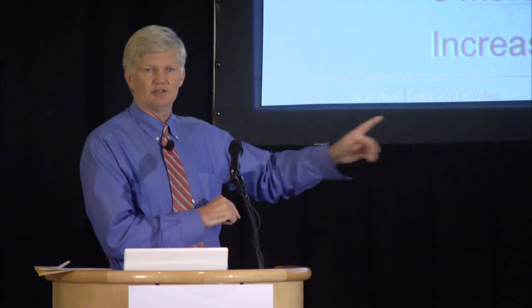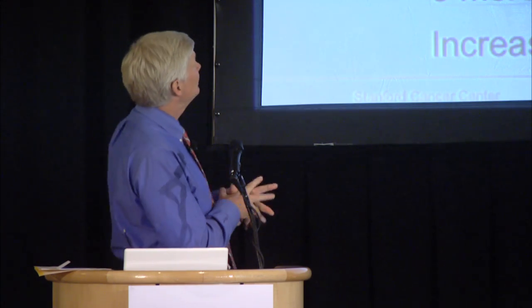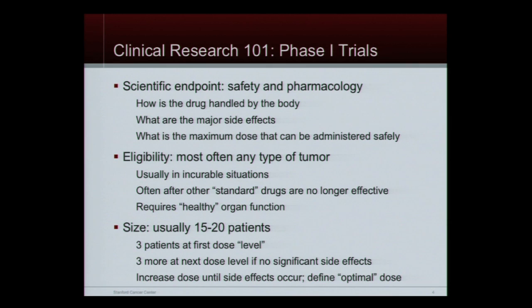No matter how many mouse experiments we've done, we have to do a phase one trial where we demonstrate safety. Safety is always the key whenever we're talking about a new drug. We have to understand not only how it is handled by the body and what the major side effects are, but what's the best dose that we're going to eventually test in patients. The only way to do that is to actually do it in people. We certainly hope that the people who enter the phase one trial have great results, but we don't know how to use a drug until we do the phase one study.